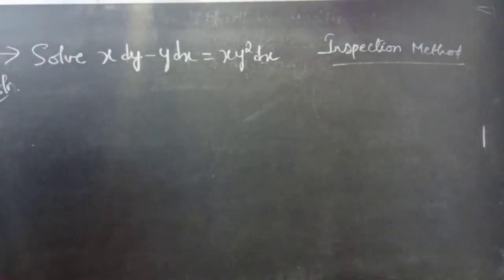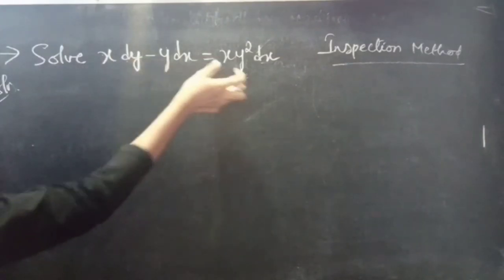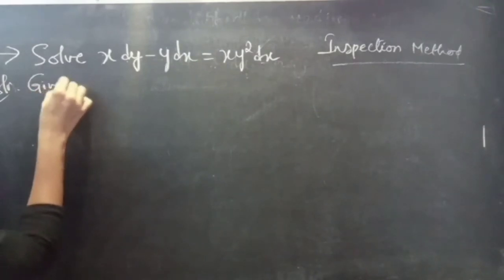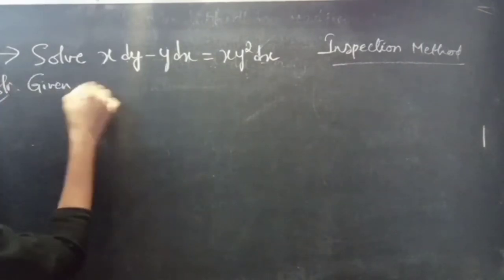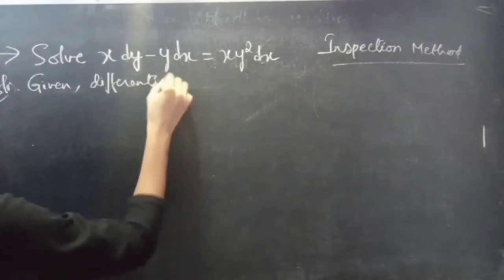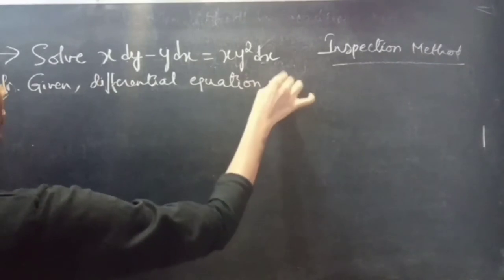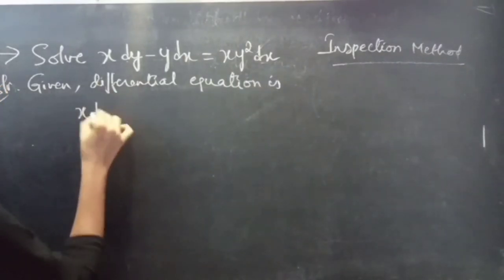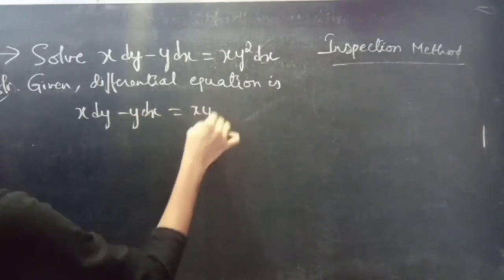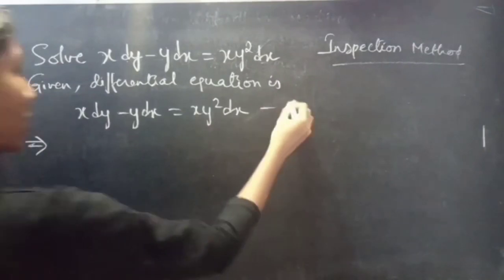Problem: solve x dy minus y dx equals to x y squared dx. The given differential equation is x dy minus y dx equals to x y squared dx. We can rewrite it — call it equation 1.